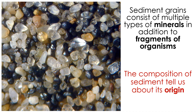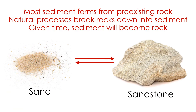What about sediment? You see sediment all the time — mud, clay, sand — these are all examples of sediment. Sediment is any material consisting of particles or grains made of minerals and fragments of organisms that accumulate in loose form. The composition of sediment is related to origin, so if we study its composition, we can learn where sediment came from. Most sediment probably comes from pre-existing rock. Natural processes break rocks down into sediment. Interestingly, given enough time, the grains of sediment can become cemented together, forming a sedimentary rock. Sandstone is an example — it forms from the sedimentation of sand grains, and you can feel these grains on its rough surface.